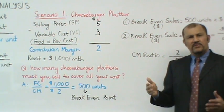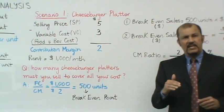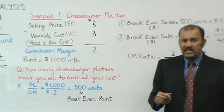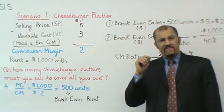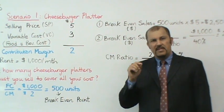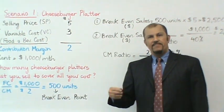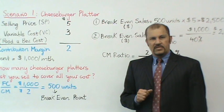So, break-even point, what is break-even point then? Break-even point is that volume of sales activity where I cover all of my costs. That means I don't make any money, but guess what? I don't lose any money. So at the very minimum, my minimum objective should be to break-even. And in this case, if I sell 500 cheeseburger platters, I will have broken even.